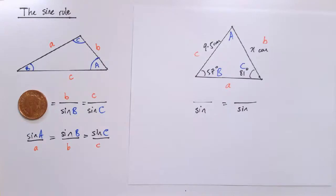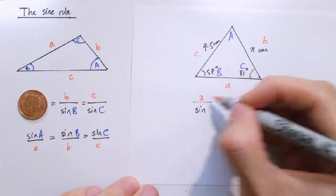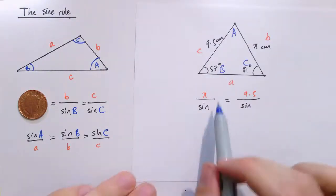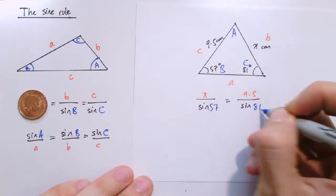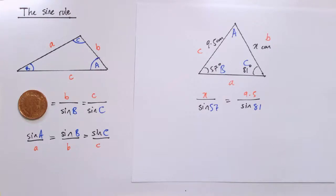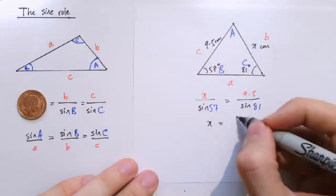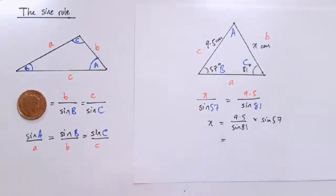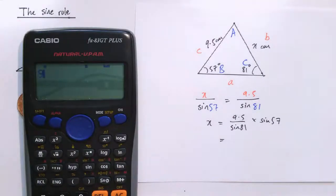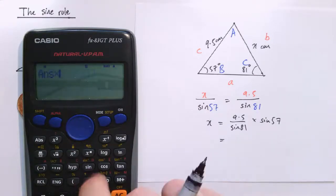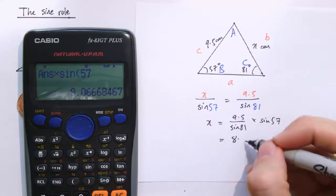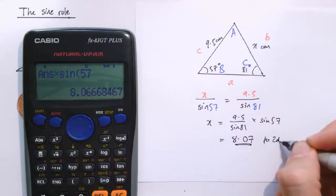So B and C are X and 9.5. So we've got X and 9.5. And the angles B and C are 57 and 81. So to work out X, we just need to do 9.5 divided by sine of 81, and then multiply it by sine of 57. So if we get the calculator answer to that, 9.5 divided by sine of 81, and then times it by sine of 57, and that gives us the missing length that we need, 8.0, and let's round it to 2 decimal places.